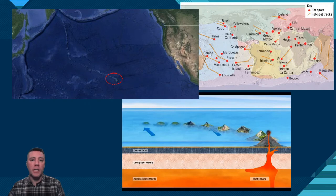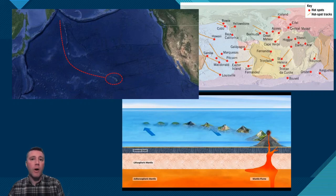Hawaii is geologically active since it's sitting directly over a hotspot. But traveling west and to the north, we observe a nearly 1,100 kilometer long chain of underwater mountains that were formed as the Pacific plate moved over the stationary hotspot.